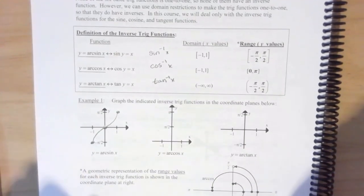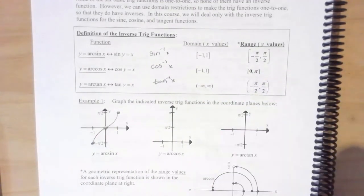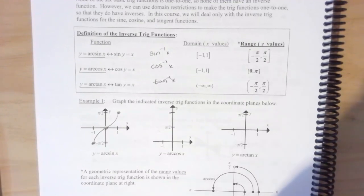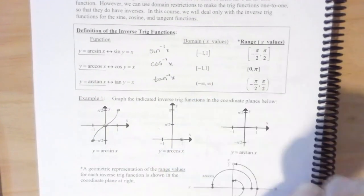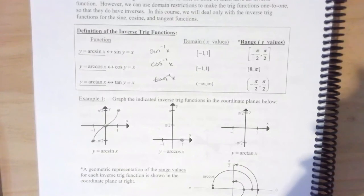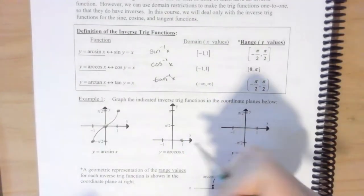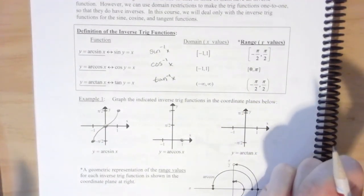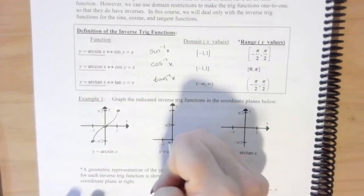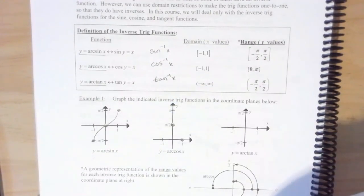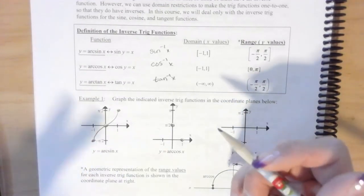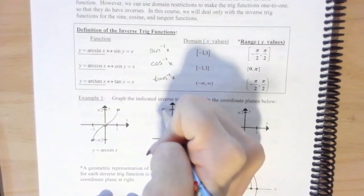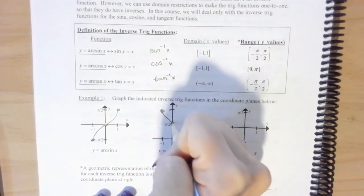Now let's do the same thing for cosine. Cosine of zero is one, so flipping that, at x=1 it's y=0. At π/2, cosine is zero, so flipping that means at x=0 it's y=π/2. At π, cosine is negative one, so flipping that means at x=-1 it is y=π. Again it looks linear but we know it is not linear.